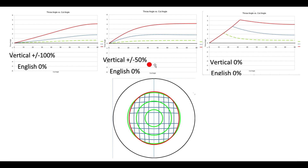The second graph is plus or minus 50% vertical spin, showing 50% forward or 50% backward roll. Frequently when playing pool, your vertical spin is something less than 100% forward roll or 100% backspin. For example, if you hit the cue ball with only one tip of vertical spin, top or bottom, it produces a sliding cue ball that will eventually reach 100% forward roll. If it contacts the object ball before that, the throw will be greater. The third graph is 0% vertical spin — a stun shot where the cue ball is sliding on contact with the object ball.